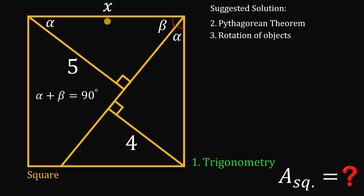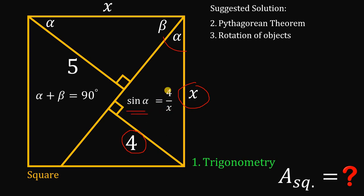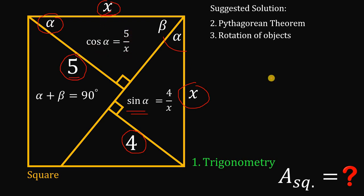Let x be the side length of the square. Since it is a square, all of its sides must be equal to x. Using this right triangle with angle alpha, side x, and side 4, we can relate these using the sine function. So sine of alpha equals 4 over x. On the other right triangle, cosine of alpha equals its adjacent side 5 over its hypotenuse x.